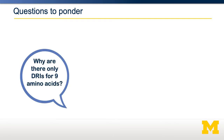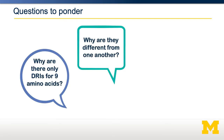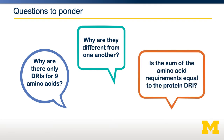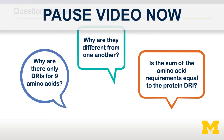Of course, adults are much bigger than infants, so at an absolute level adults need much more than infants. But on a per kilogram of body weight basis, infants have the highest amino acid requirements. Here are some questions I want you to pause the video and think about: Why are there DRIs for only nine amino acids? Why are the DRIs so different from one another? And what is the sum of the amino acid requirements — do you think that's the same or different than the total protein dietary recommended intake? Pause the video and take a minute to think about these questions.